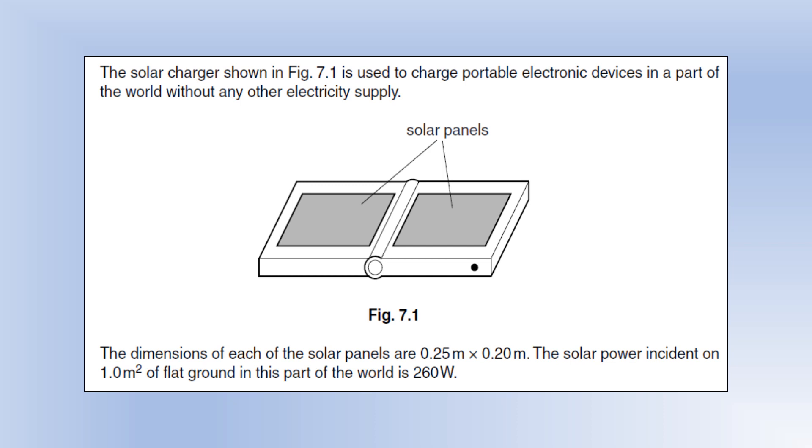Solar charger used to charge portable electronics without any electricity supply. We've got two solar panels, each with dimensions 0.25 times 0.2. We know the solar power incident on one meter squared of flat ground is 260, so the intensity of the sunlight is 260 watts per meter squared.